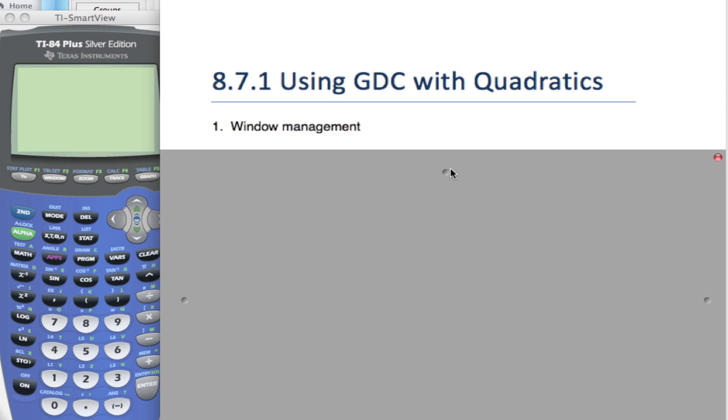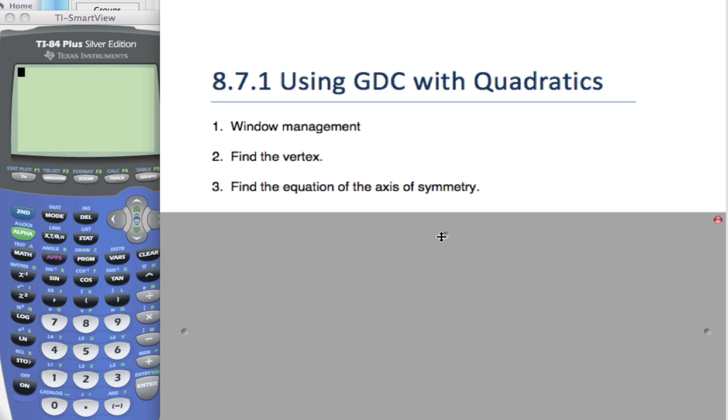In this one, we are going to talk about window management. Where's my graph? I can't find it. We're going to talk about how to find the vertex and then, hence, the equation of axis of symmetry.